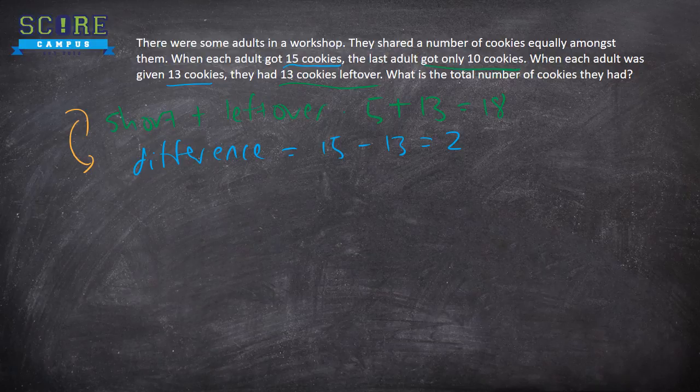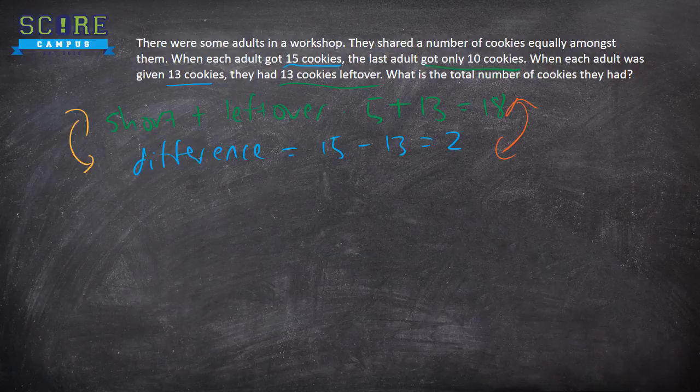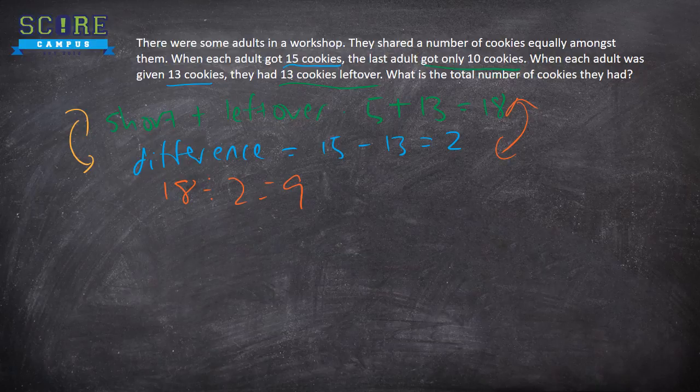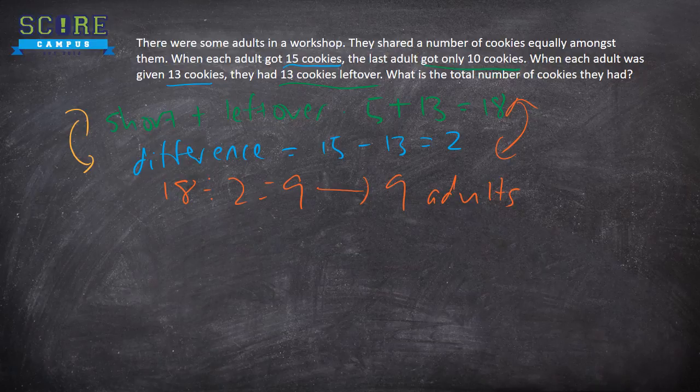So now this step here you must relate these two. So 18 divided by 2 equals to 9. And so this means that there were 9 adults.